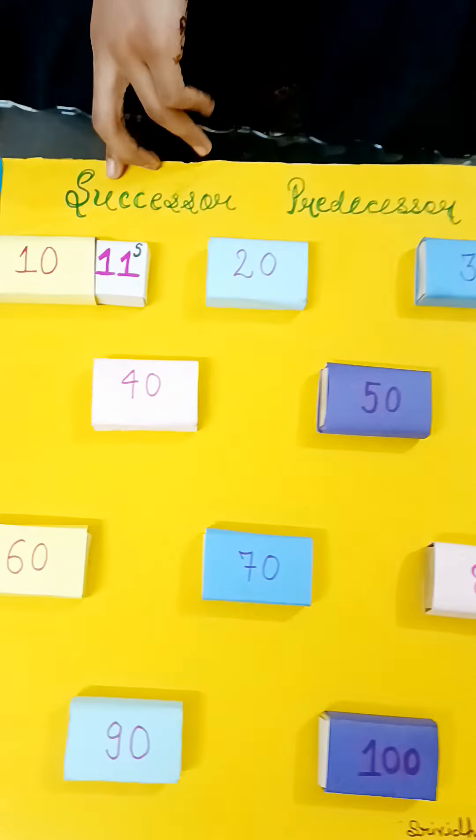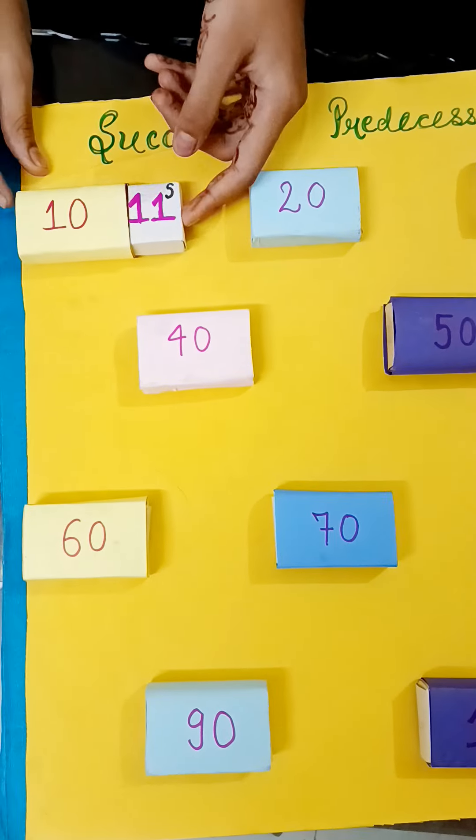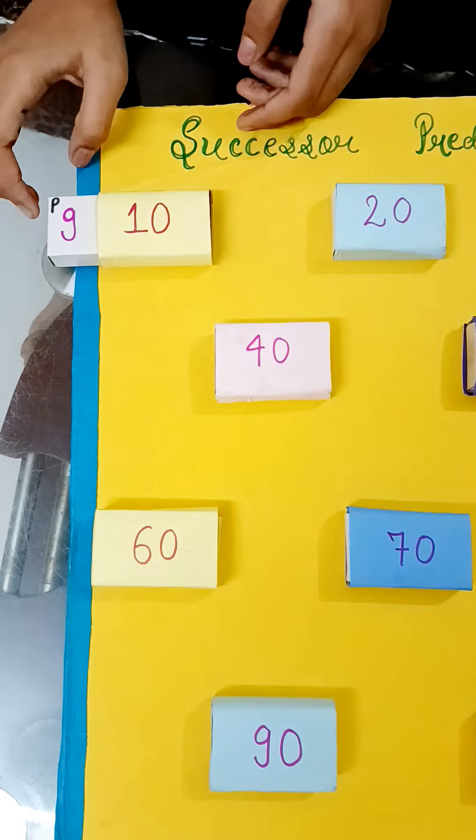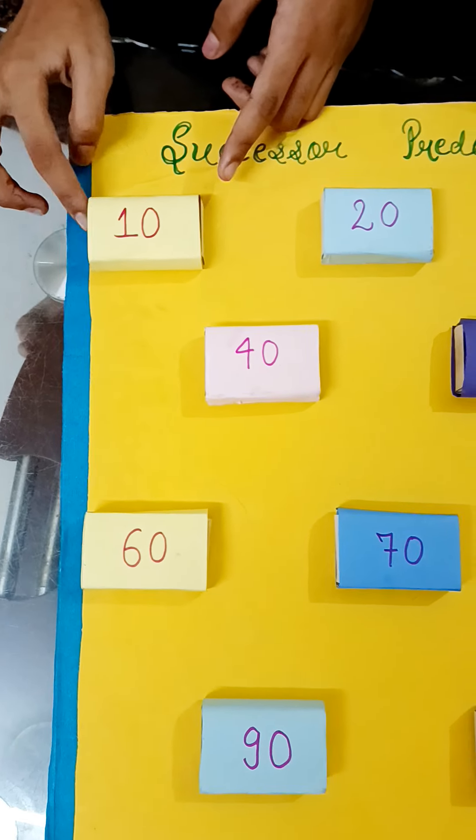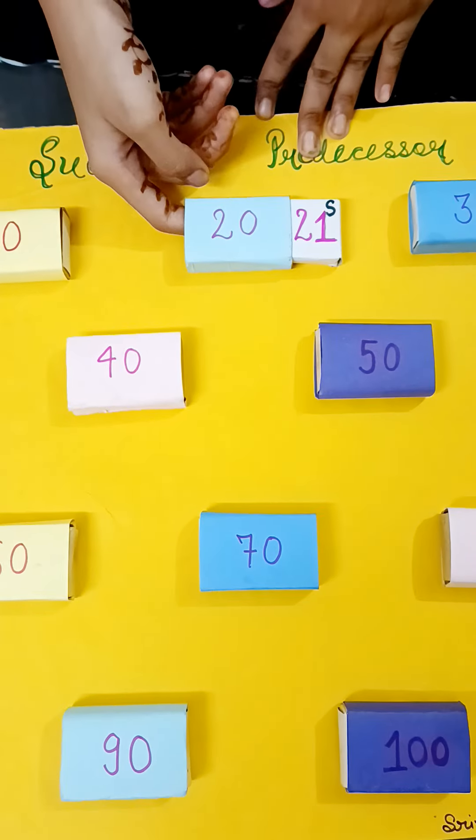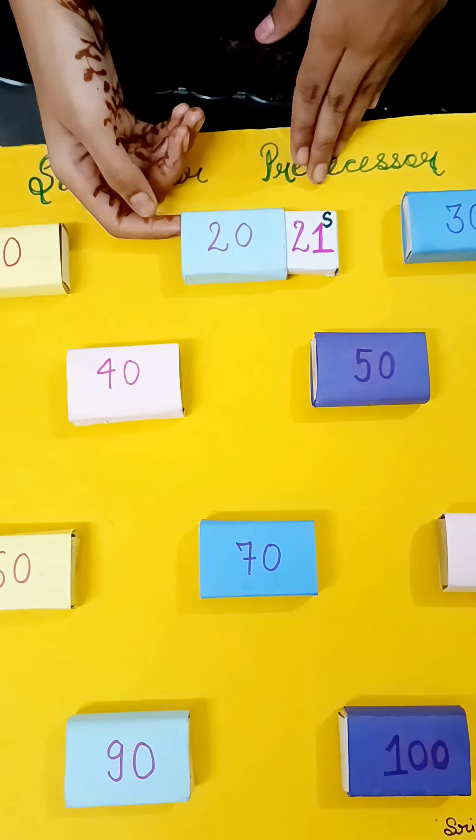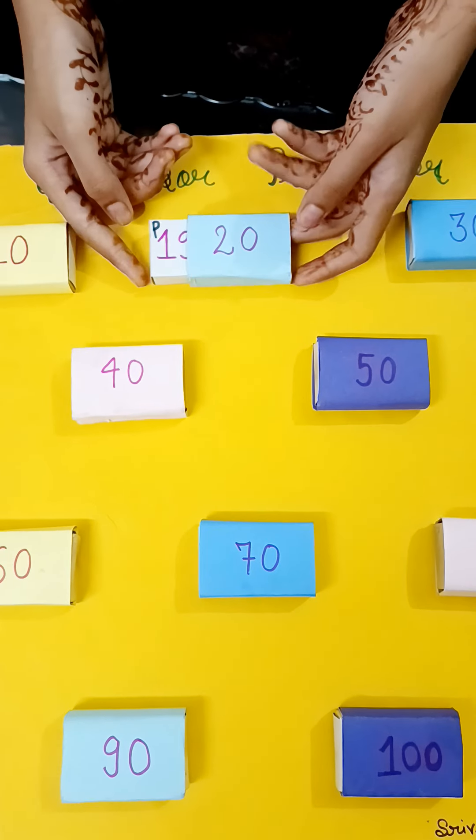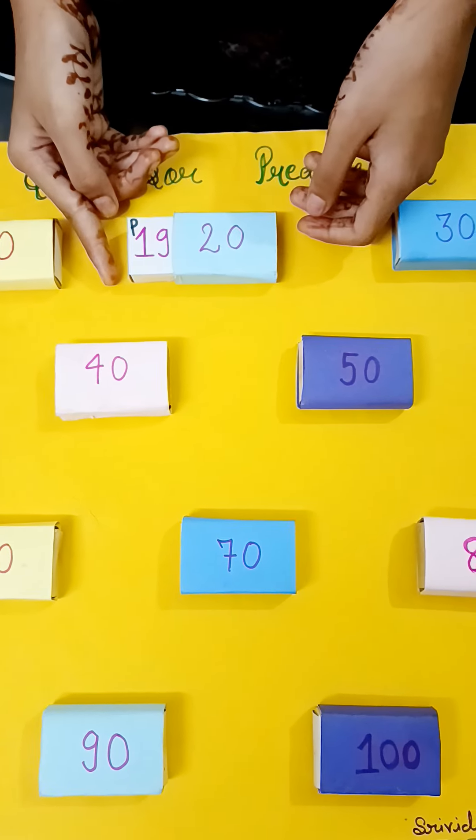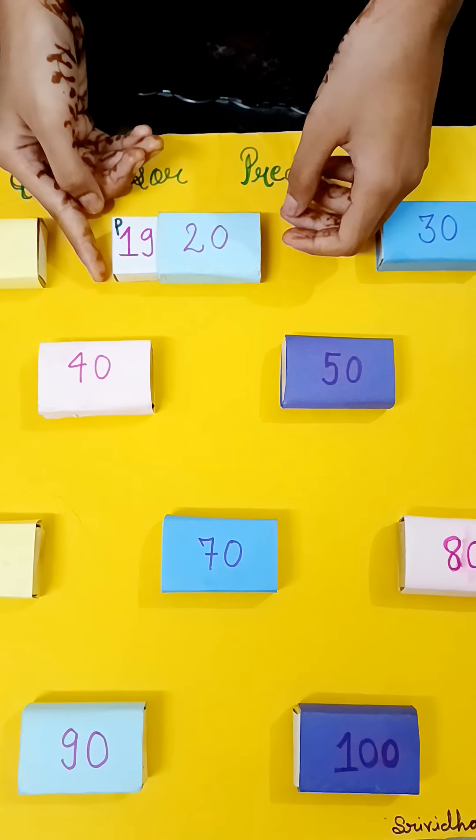11 is successor of 10 and 9 is predecessor of 10. 21 is successor of 20 and 19 is predecessor of 20.